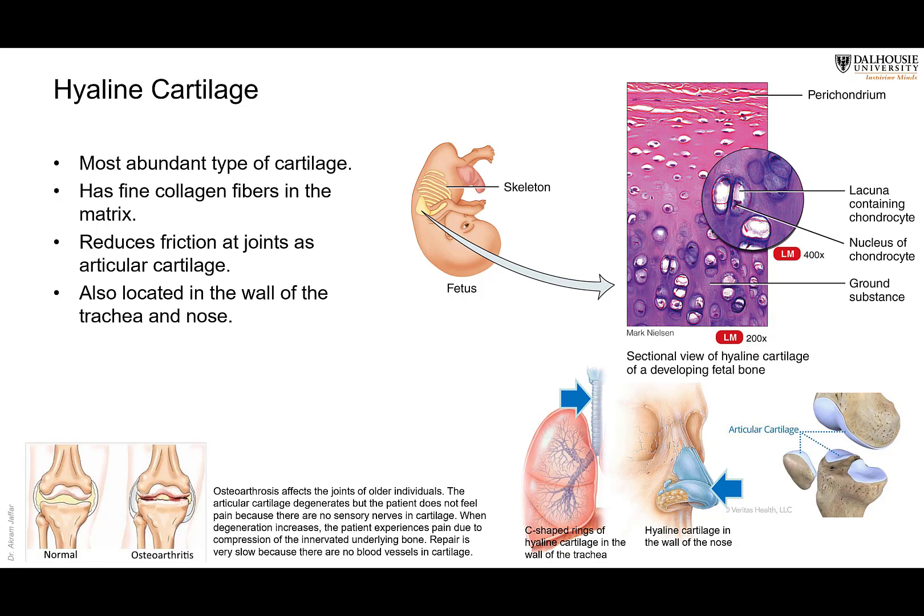Let's start with the first type: hyaline cartilage. This is the most abundant type of cartilage in the body. Hyaline means glassy, because under the microscope you cannot see the fibers in the ground substance — the fibers are thin and tiny, so it looks like transparent glass. Most of the skeleton in the embryo and fetus is in the form of hyaline cartilage — a template that later changes into bone.